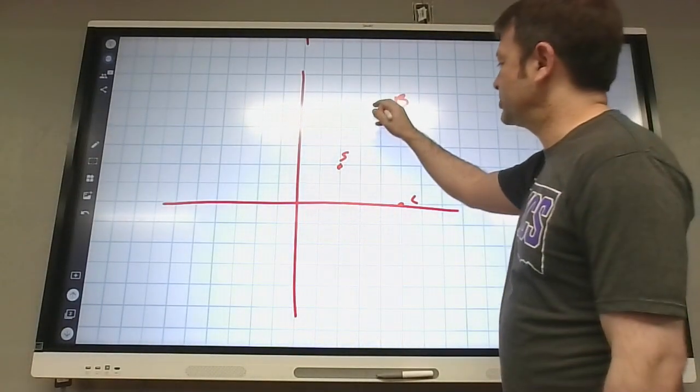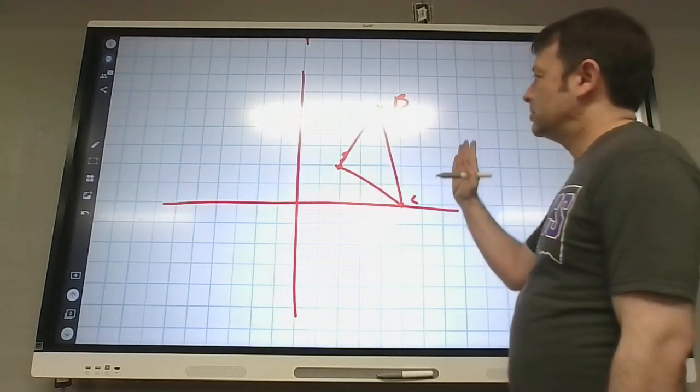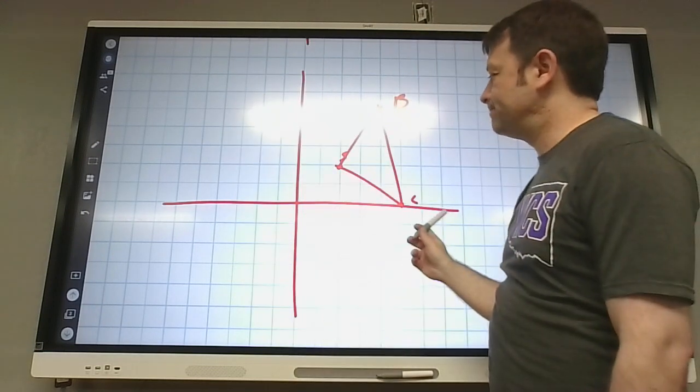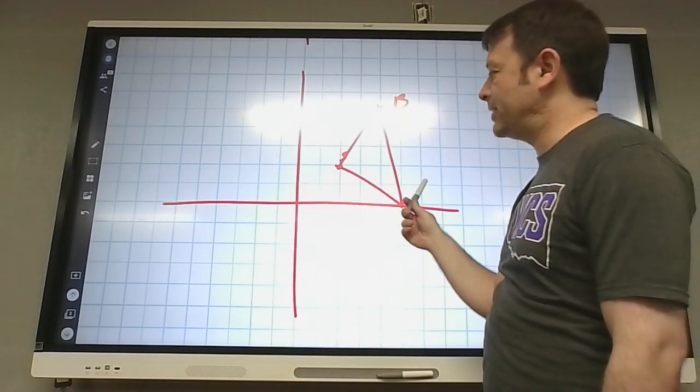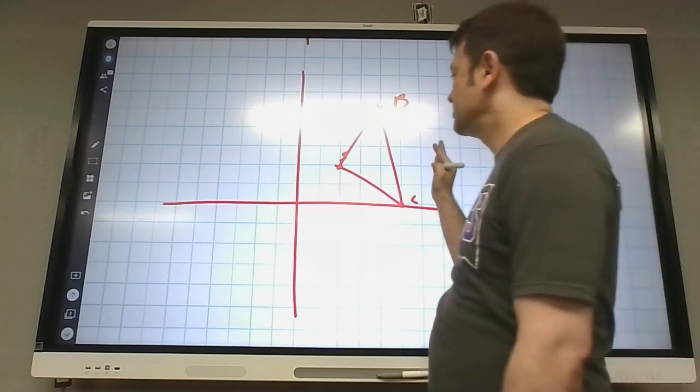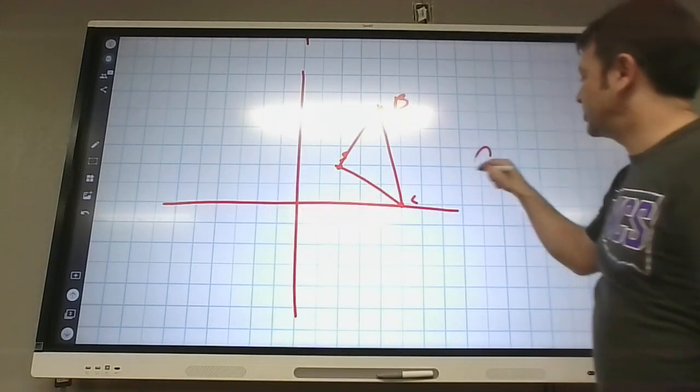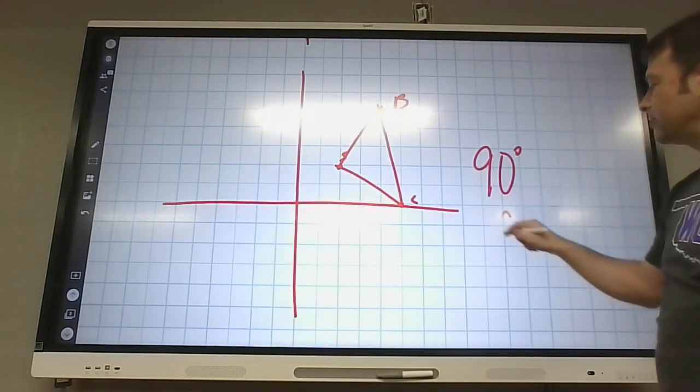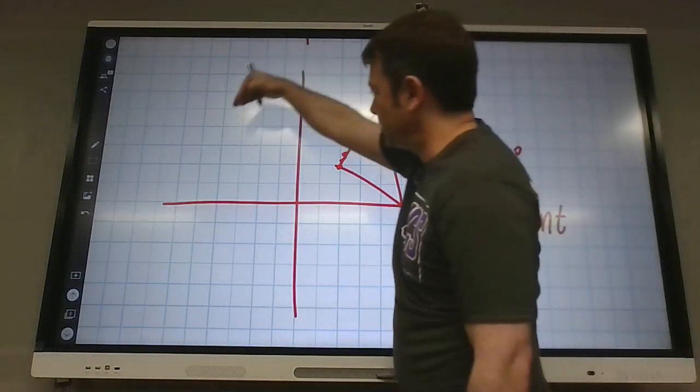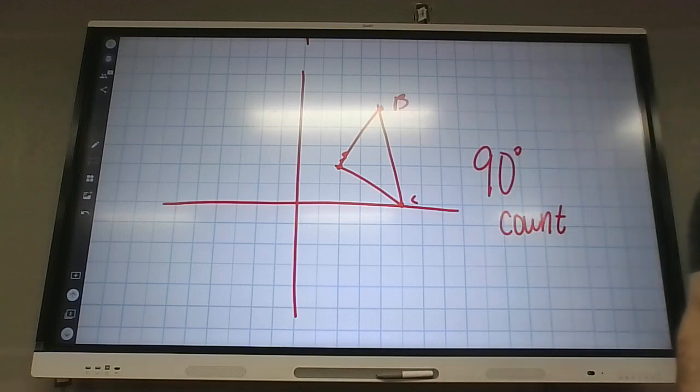So counterclockwise would be which direction? This way, right? Okay. So if it's in the first quadrant now, what quadrant will it end up in? Second quadrant. Oh, sorry. And we're going 90 degrees counterclockwise. So it's like a quarter turn counterclockwise. It'll end up in the second quadrant. Okay. Here's my best advice.